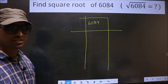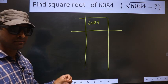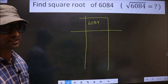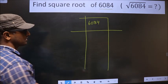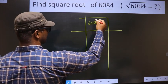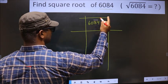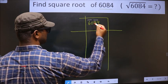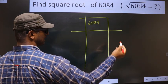Now we should divide the given number into pairs, starting from this side. These two numbers form one pair, and these two numbers form another pair.